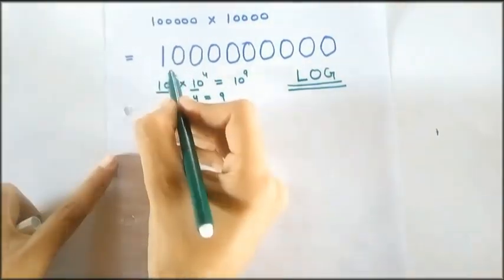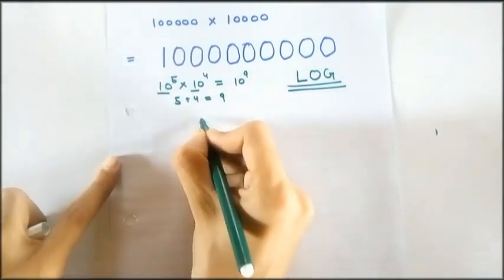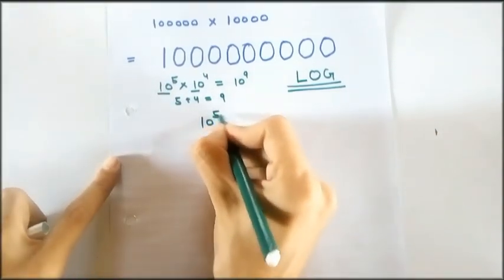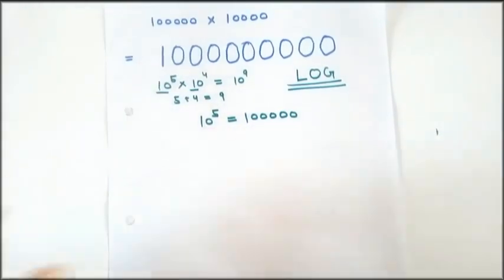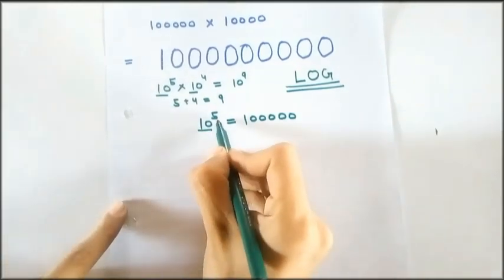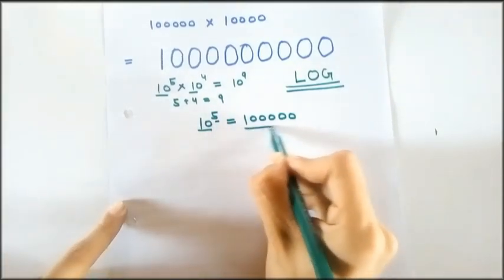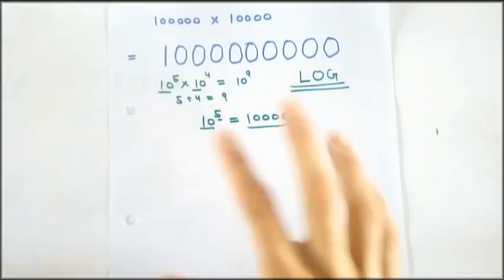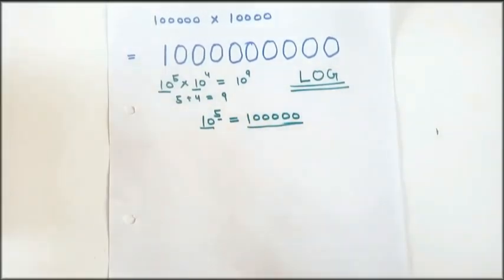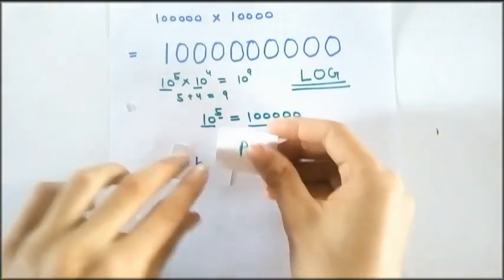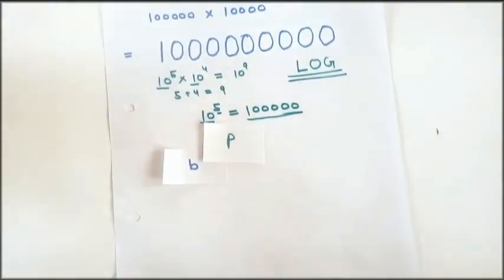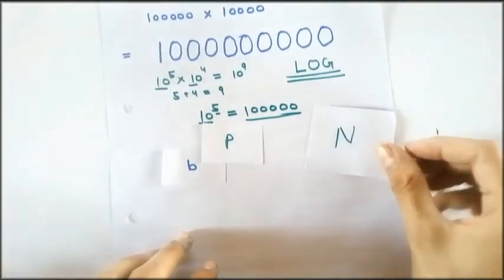Now, let's look at this 10 raised to the power 5. That is 10 raised to the power 5 is equal to 1 followed by 5 zeros. So now, here is a base and here is its power and here is an answer. So now let's take them in a nomenclature. Here is a base, right?